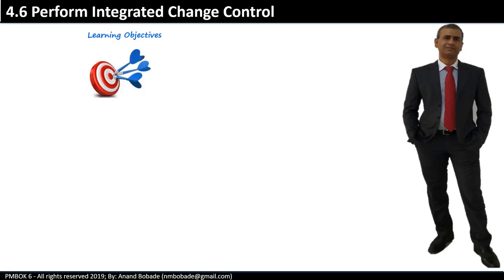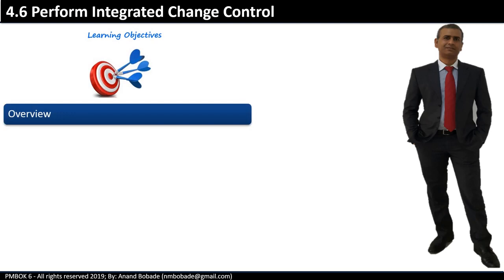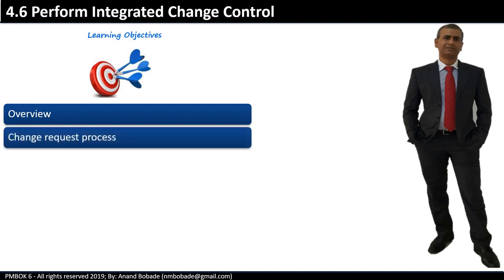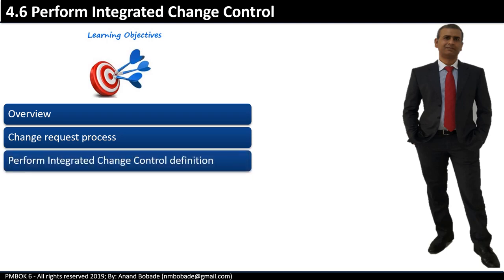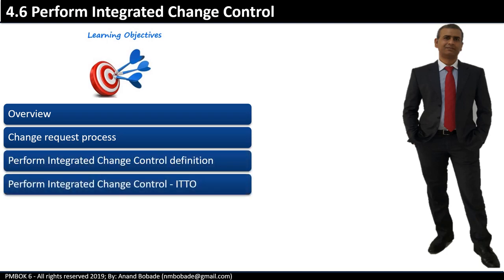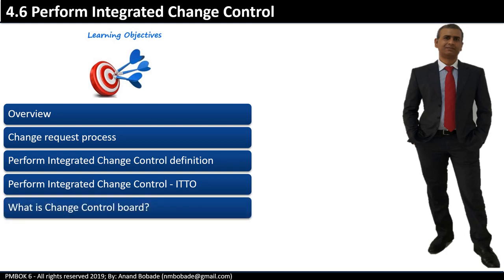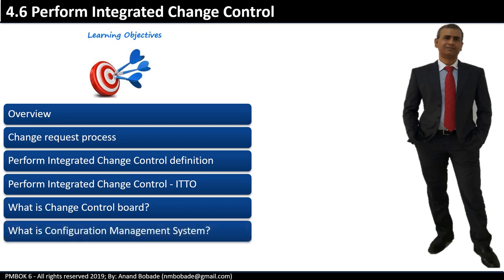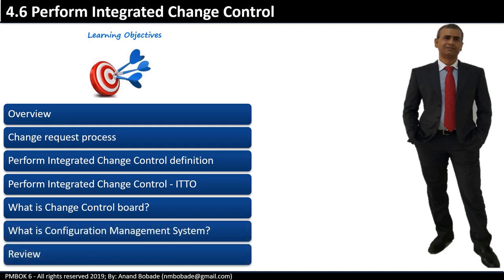The learning objectives of this session: In overview, we will try to understand the purpose of the change control process and go through some key terms. We will go through the generic change request process, the process definition, the ITTOs involved, the change control board, and the configuration management system. Finally, we will do a quick review.